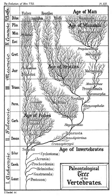One of Cuvier's successful contributions to the understanding of the fossil record was establishing extinction as a fact. In an attempt to explain extinction, Cuvier proposed the idea of "revolutions," or catastrophism, in which he speculated that geological catastrophes had occurred throughout the Earth's history, wiping out large numbers of species.